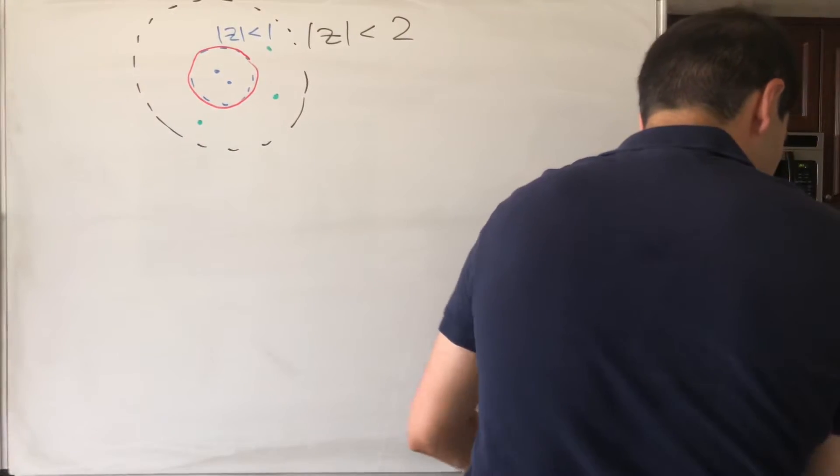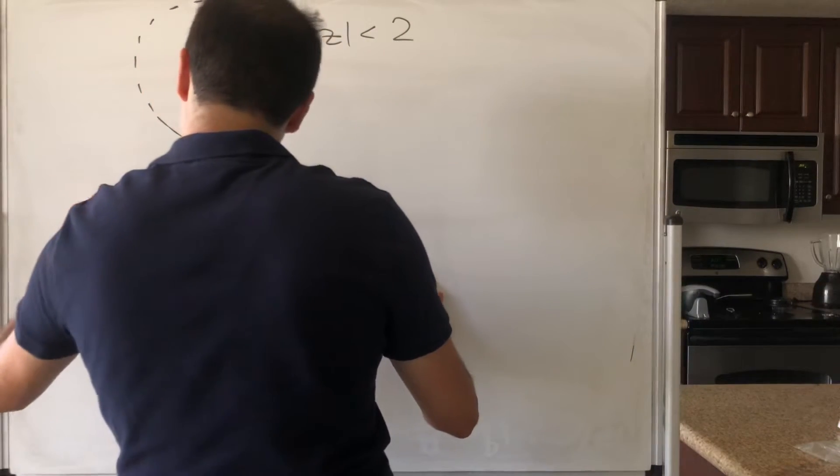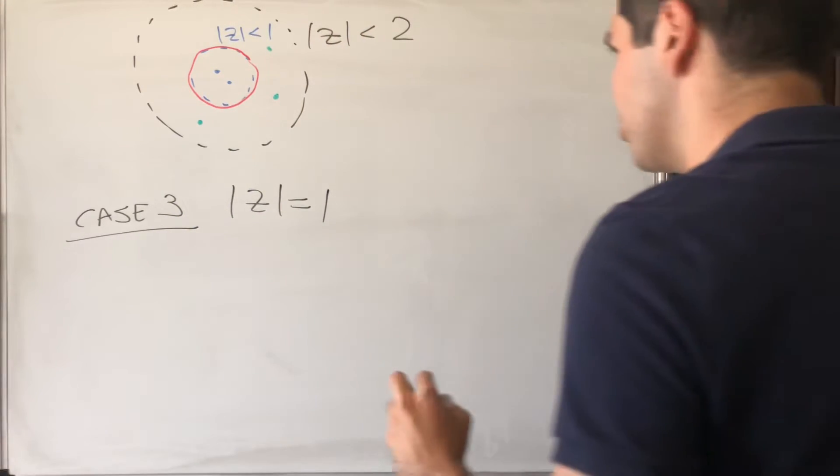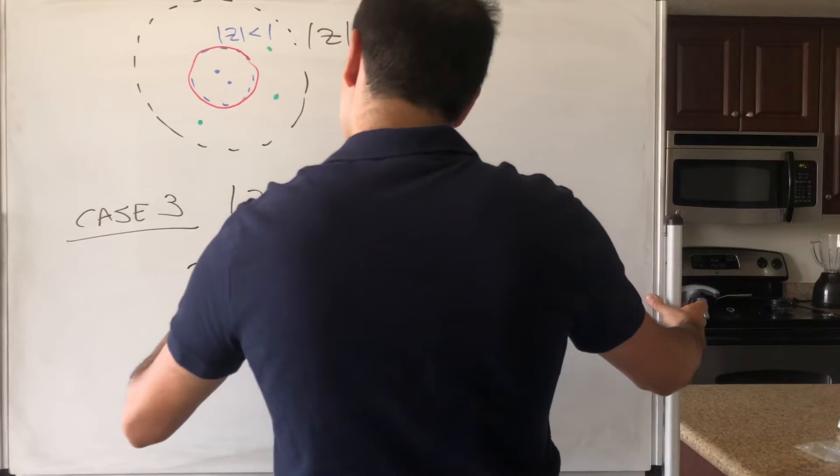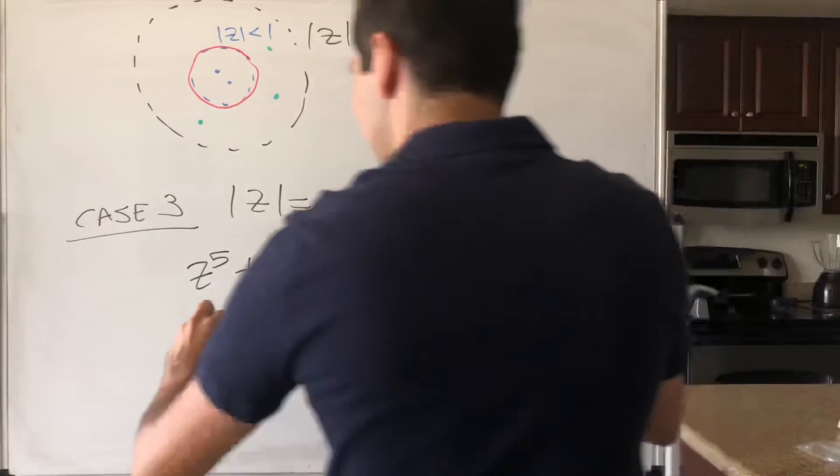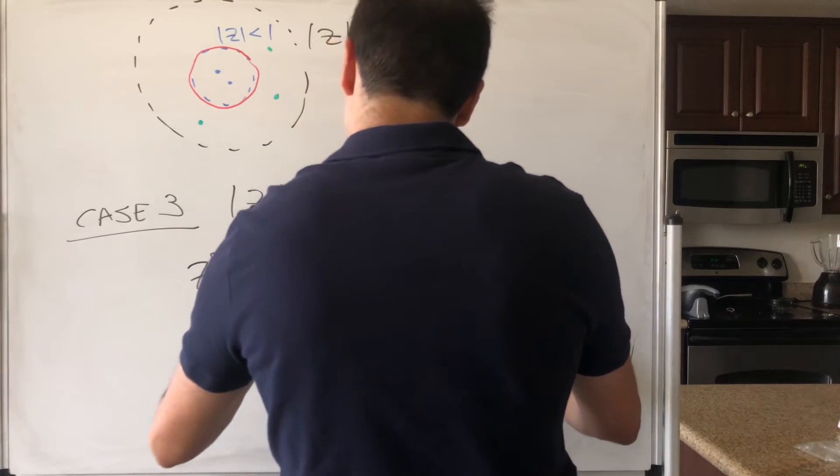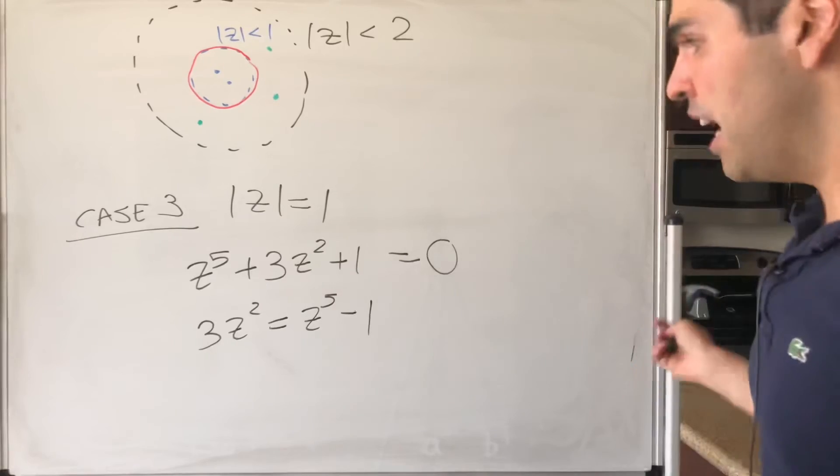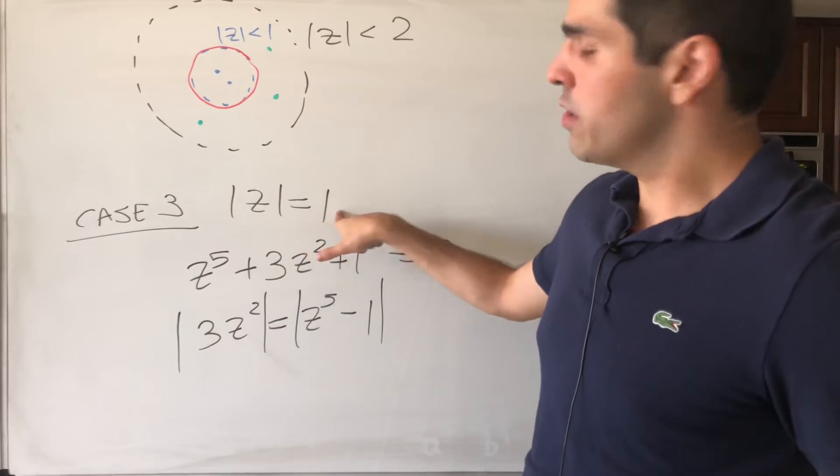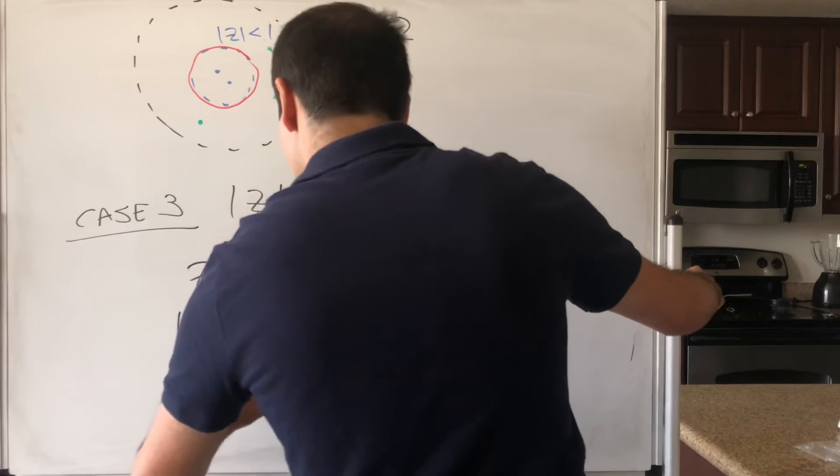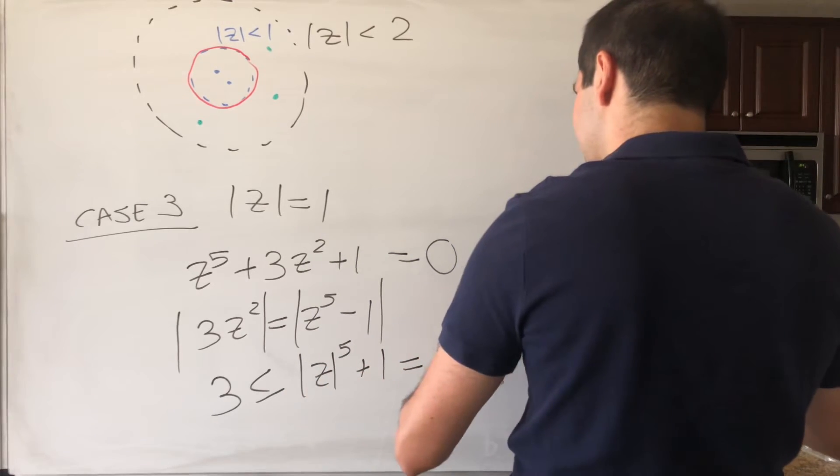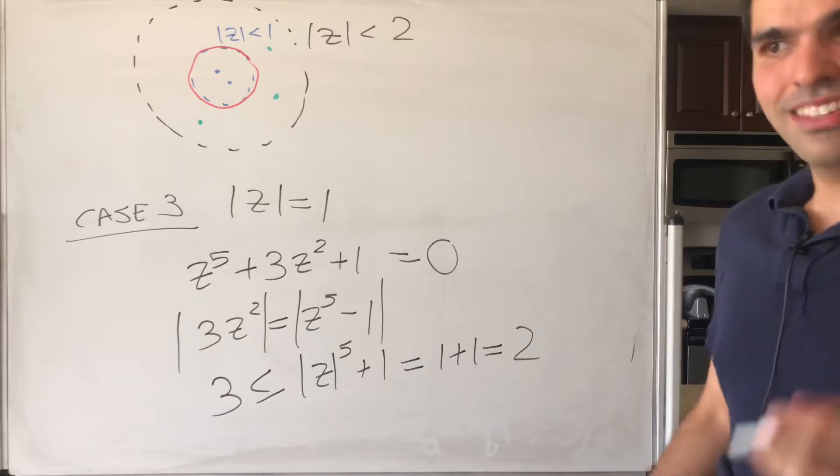So case 3, |z| = 1, but again, this can just be eliminated by some algebra, because if z^5 + 3z^2 + 1 = 0, then what we get, we get that 3z^2 = -(z^5 + 1), but now just take absolute values. So absolute value of 3z^2, because |z| = 1, that equals 3, and now by the triangle inequality, this becomes |z^5| + 1, which is 1 + 1, which is 2, which doesn't make sense.